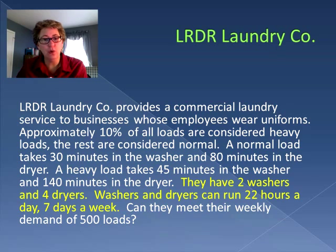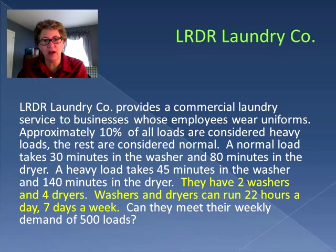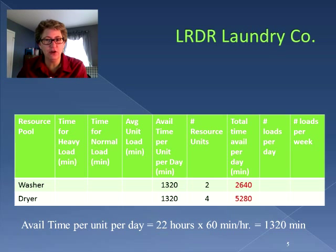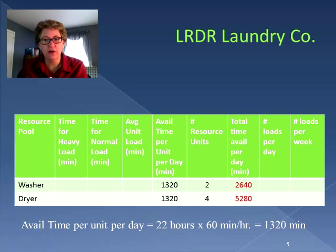In the problem, they state that they have two washers and four dryers, and the washers and dryers can run 22 hours a day, seven days a week. This gives us the available time for the different resource pools. The washer pool has two resource units, each running 22 hours a day — that's 1,320 minutes each, so the total time available per day is 2,640 minutes. The dryer is also running 22 hours a day, so each dryer runs 1,320 minutes, but there are four units, giving a total of 5,280 minutes available for dryer time.